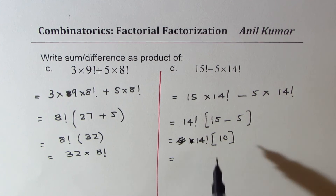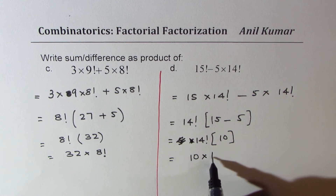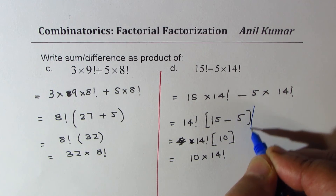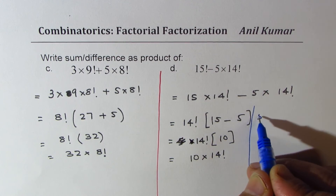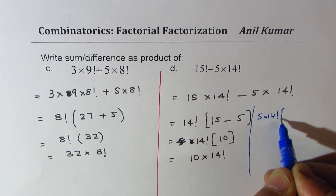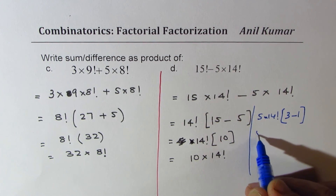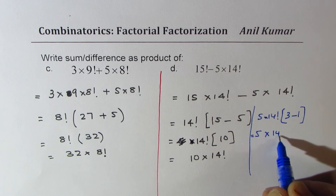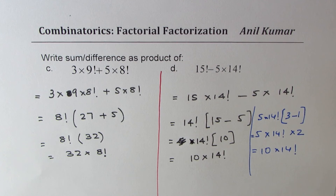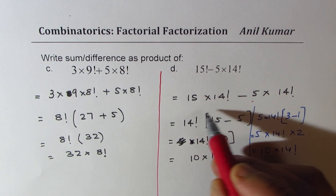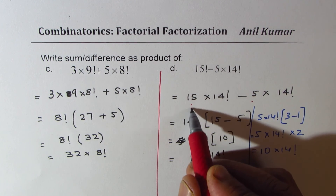15 minus 5 is 10, so we get 10 times 14 factorial. Now if we had taken 5 also as common from 5 times 14 factorial, we get 5 times 14 factorial times 3 minus 1, which gives 5 times 14 factorial times 2, which is the same as 10 times 14 factorial. So whether you factor out 5 or not, you get the same result. The preference is to concentrate on the factorial term to be factored, not on the numbers.